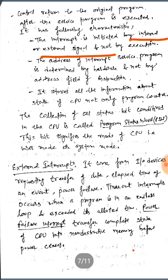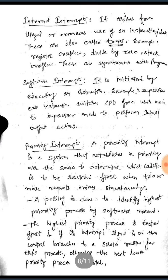The next type is the external interrupt, which comes from input-output devices or peripheral devices requesting transfer of data, elapsed time of an event, or power failure. Timeout interrupts occur when a program is in an endless loop and exceeds its allotted time. A power failure interrupt transfers the complete status of the CPU into non-destructive memory before power ceases.